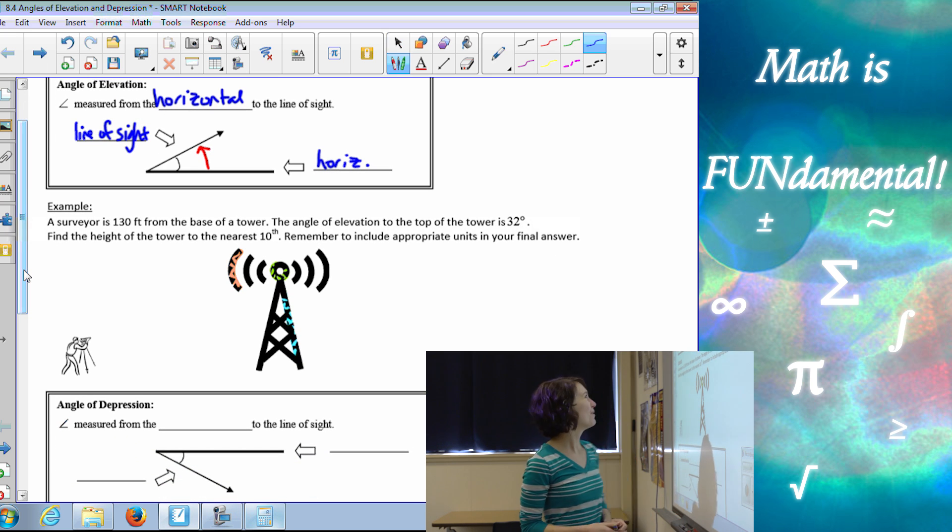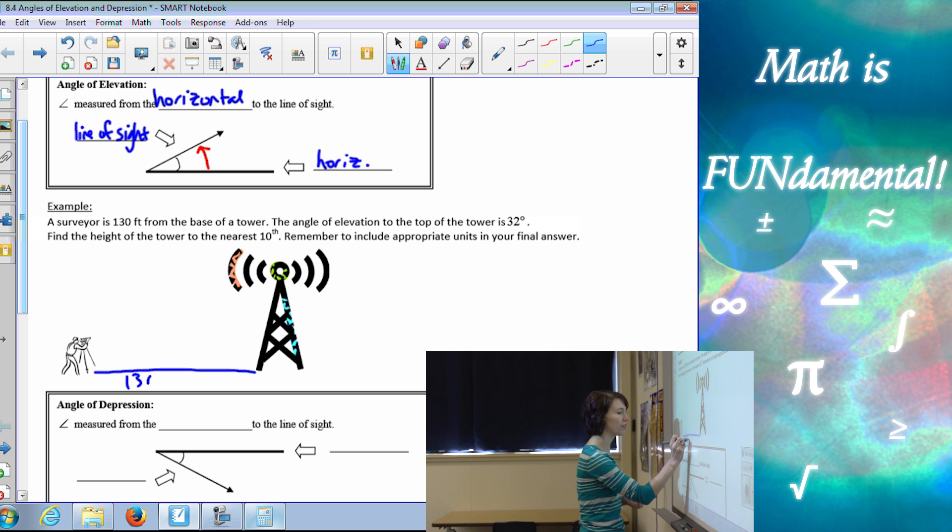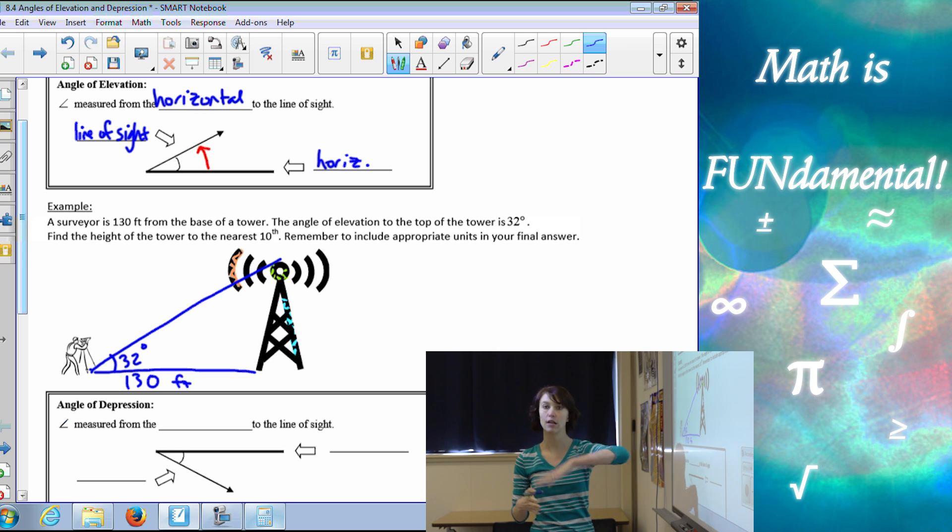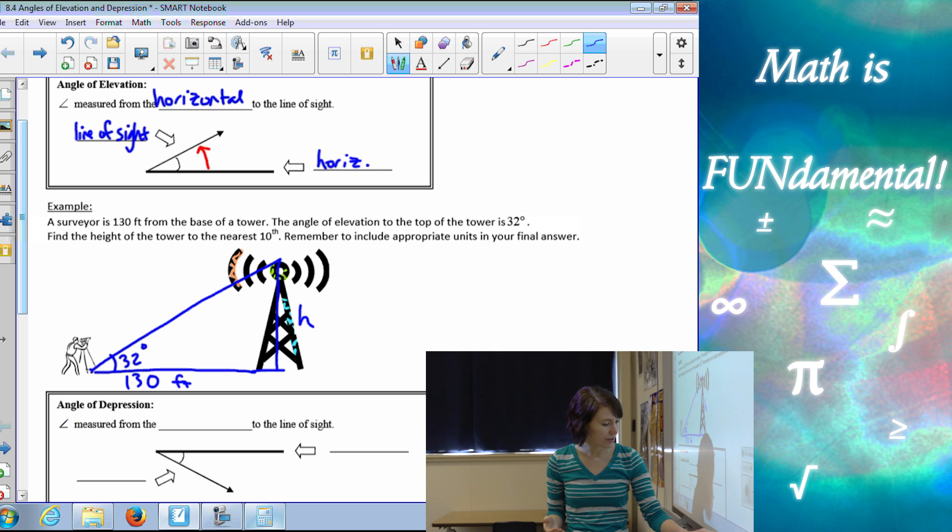So let's look at an example. We have a surveyor is 130 feet from the base of the tower. So here I've got my little picture and you can draw your own pictures. And it's 130 feet from the base of the tower. The angle of elevation to the top of the tower, so if we look at to the very top of the tower, our angle of elevation is 32 degrees. So from our horizontal up to the line of sight. Find the height of the tower. So here's my height to the nearest tenth. Remember to include appropriate units in your answer.